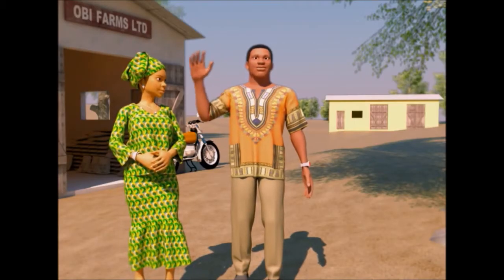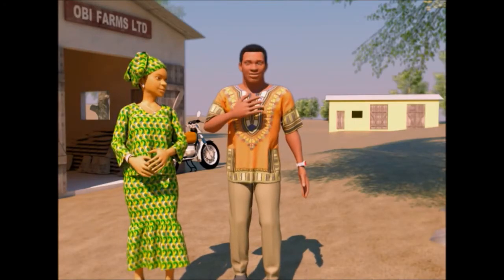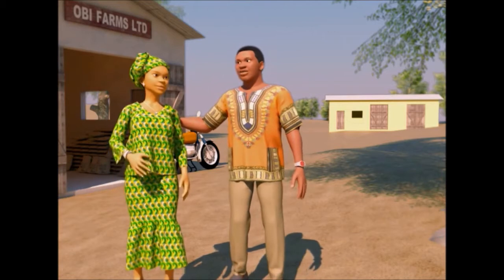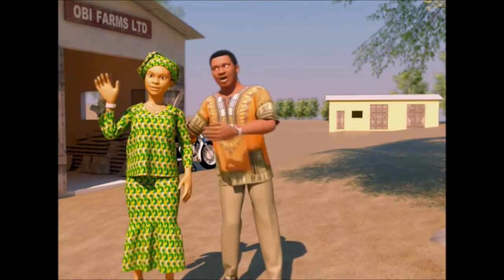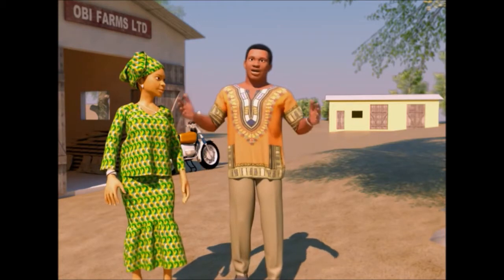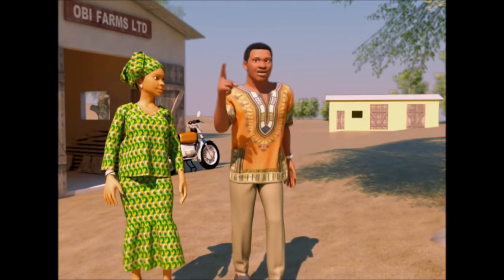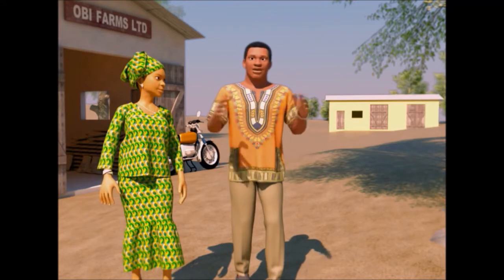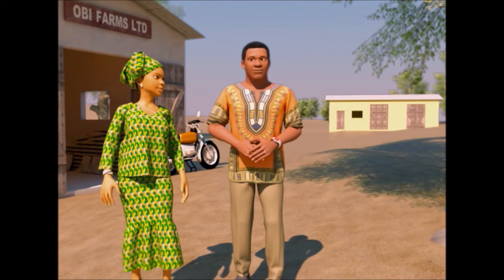Hello. My name is Obi. This is my wife, Aminat. We are successful farmers. We grow cocoa and additional food crops, especially cassava, to diversify our income and improve our nutrition.